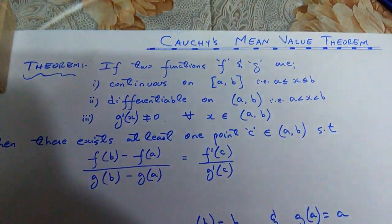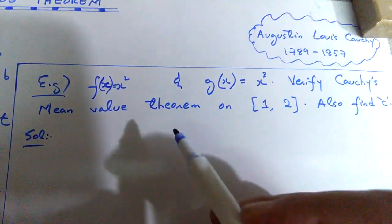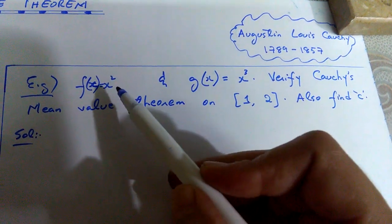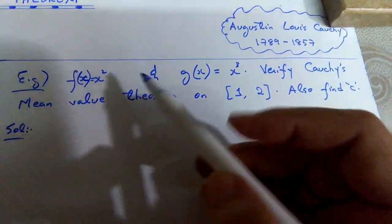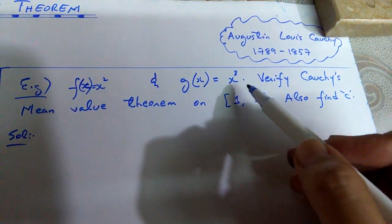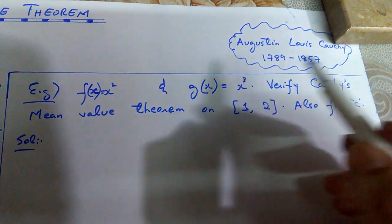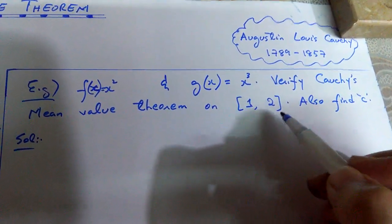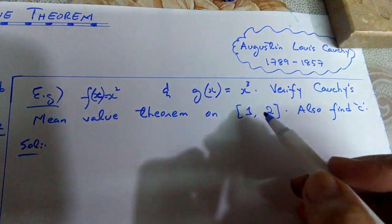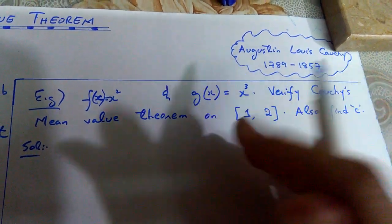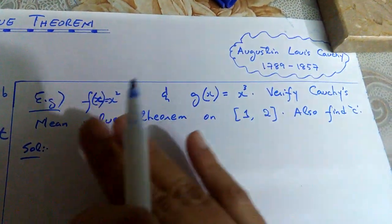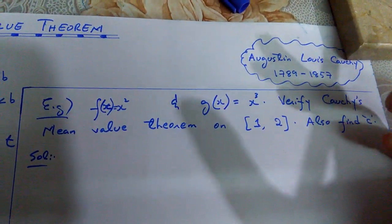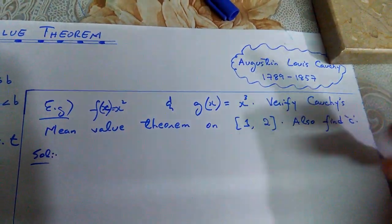Here is the example. Your f(x) is defined as x squared, and g(x) is x cubed. You have to verify Cauchy's Mean Value Theorem on the closed interval [1, 2]. If these two functions satisfy the theorem, then you have to find the value of c.